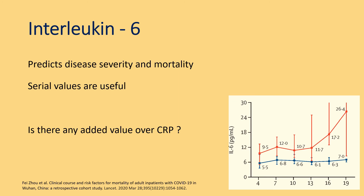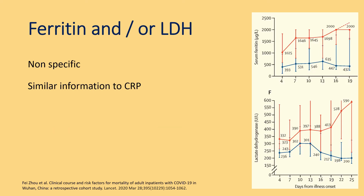Interleukin-6 (IL-6) is another marker used to predict disease severity and mortality; serial values rather than a single value are more useful. Importantly, delayed sample processing can increase IL-6 levels. The additional benefit of IL-6 over CRP is still debatable. In settings where IL-6 is unavailable, CRP is preferred. Ferritin and LDH are non-specific markers of inflammation, elevated in COVID-19, but provide similar information to CRP with no additional benefit.